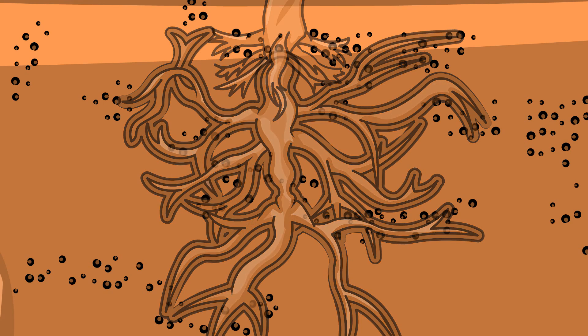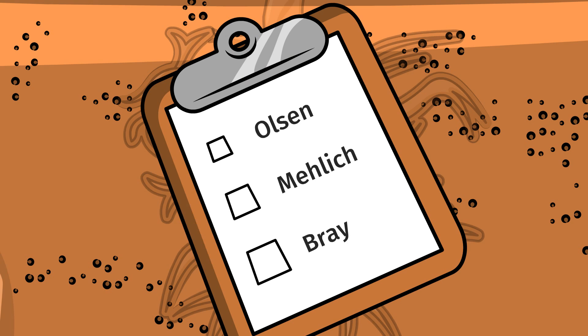The minerals binding phosphorus in soil are usually either calcium or iron and aluminum. This means you need to use the correct test for your soil to find out how much phosphorus plants can get.